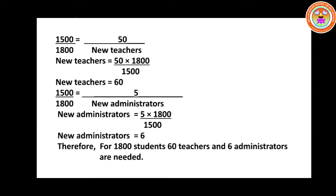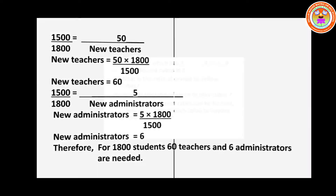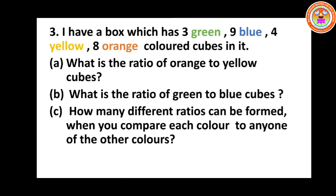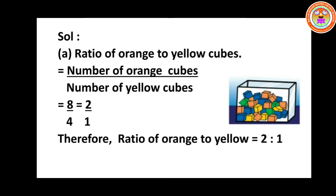Shall we move on to problem number three? I have a box which has 3 green, 9 blue, 4 yellow, and 8 orange colored cubes. What is the ratio of orange to yellow cubes? What is the ratio of green to blue cubes? And how many different ratios can be formed when comparing each color to any one of the other colors? Option A: ratio of orange to yellow cubes.